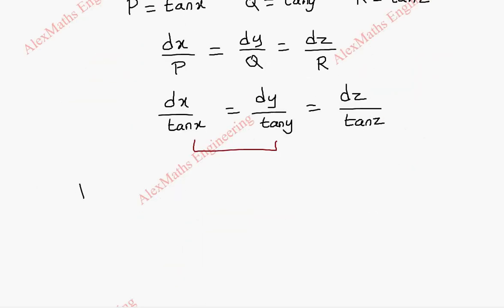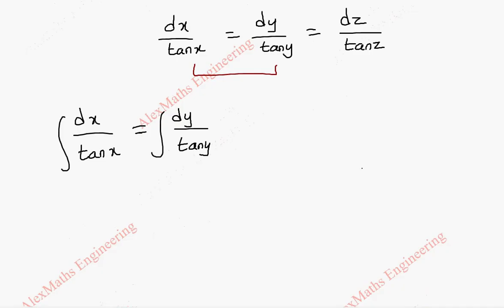Now taking first two terms, this is already in the form of variable separable. So dx by tan x equal to dy by tan y. Integrate on both sides. When we take to the numerator, one by tan is cot. So it is actually cot x dx, and on the other side, it is cot y dy.